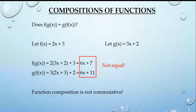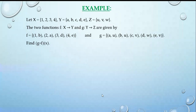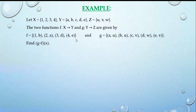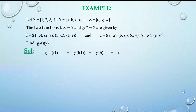We conclude that function composition is not commutative. Now let's take an example with discrete sets. We have set X = {1, 2, 3, 4}, set Y = {a, b, c, d, e}, and set Z = {u, v, w}. Function f is defined from X to Y, and function g is defined from Y to Z. f is given by the ordered pairs {(1,b), (2,a), (3,d), (4,e)} and g by {(a,u), (b,u), (c,v), (d,w), (e,v)}.